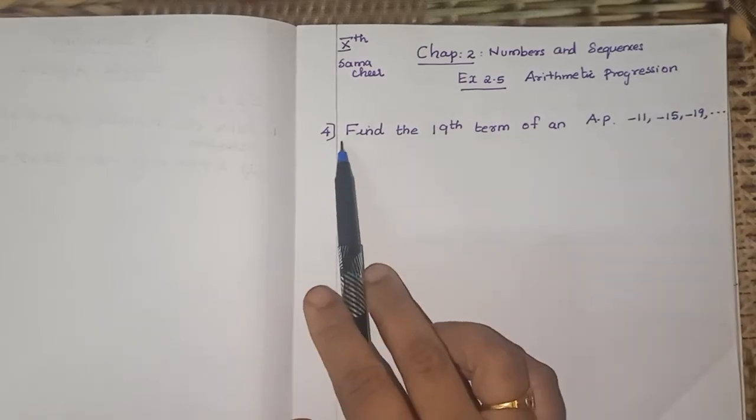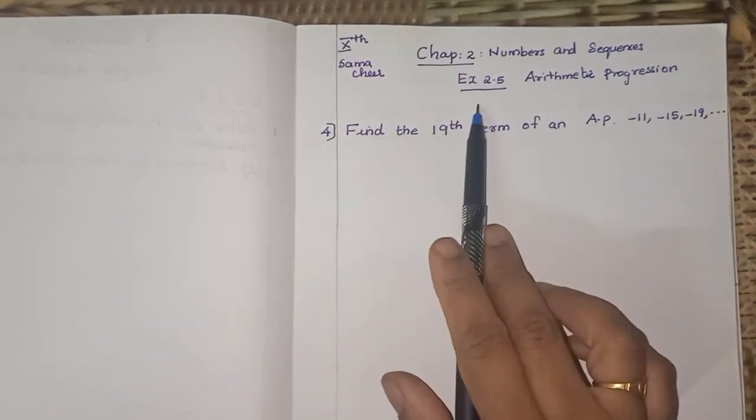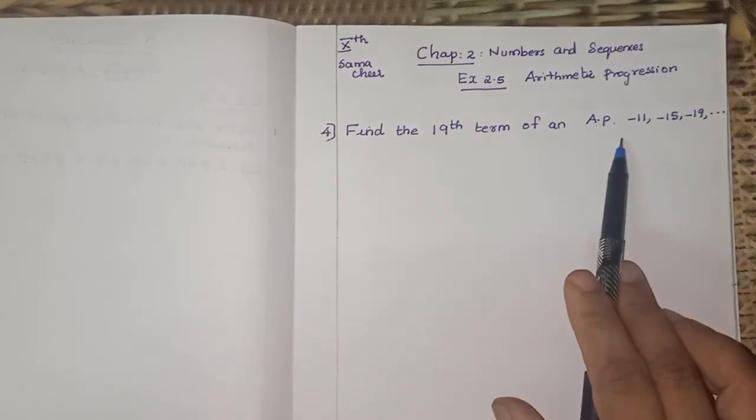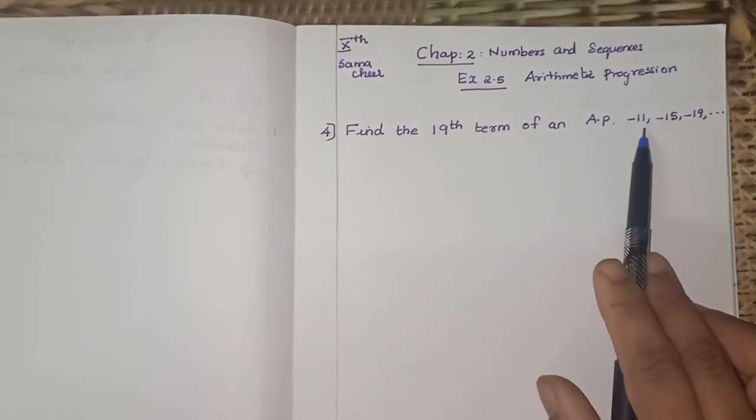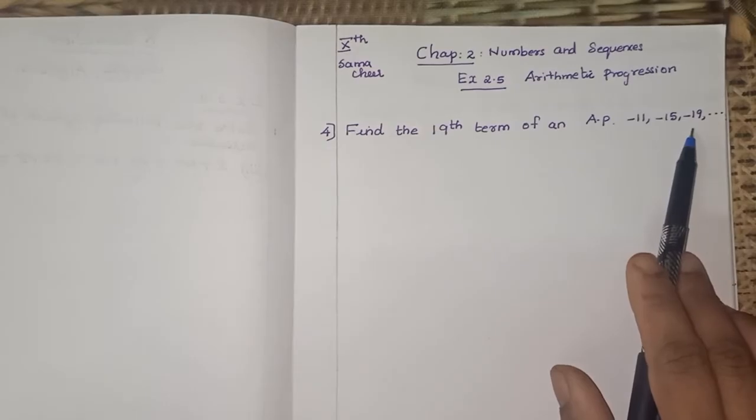In AP we are going to see the 4th sum, Exercise 2.5. Find the 19th term of an AP. AP is given minus 11, minus 15, minus 19.